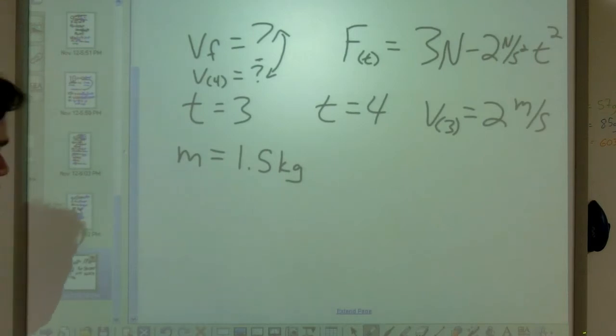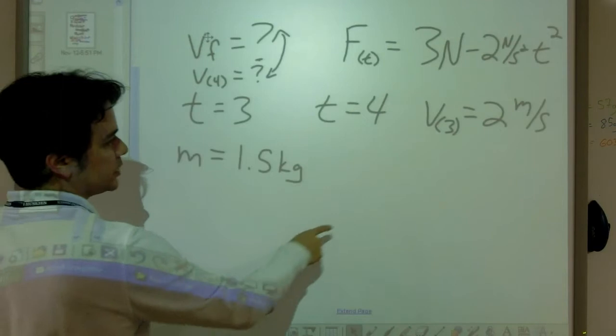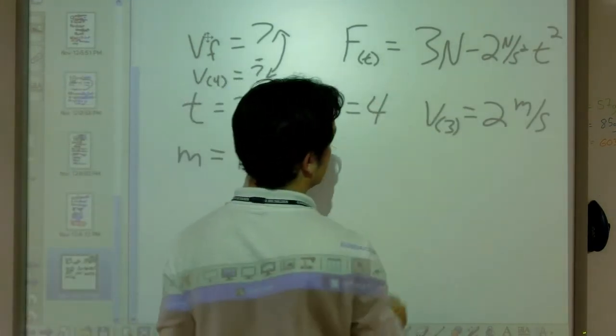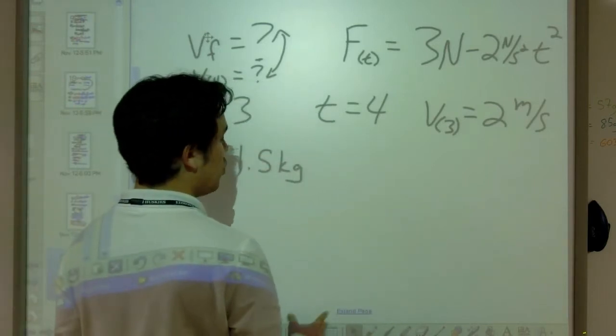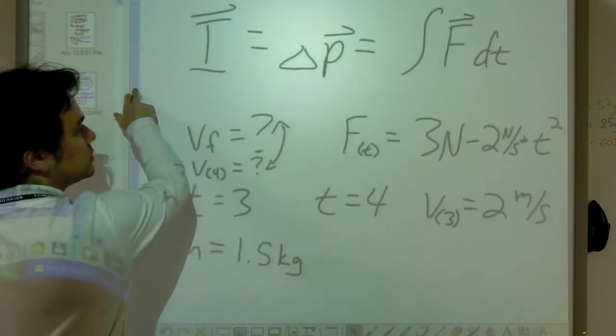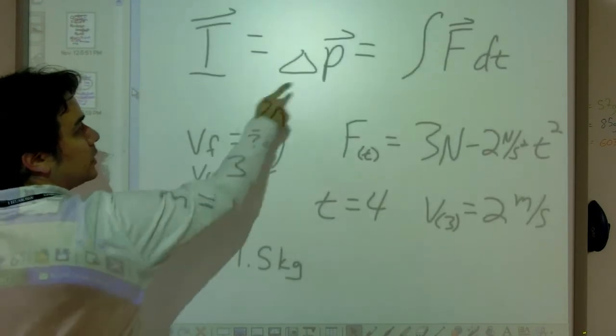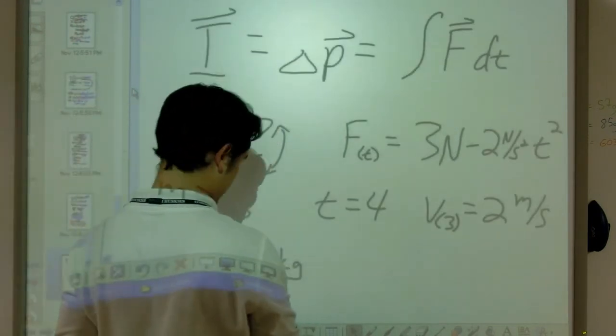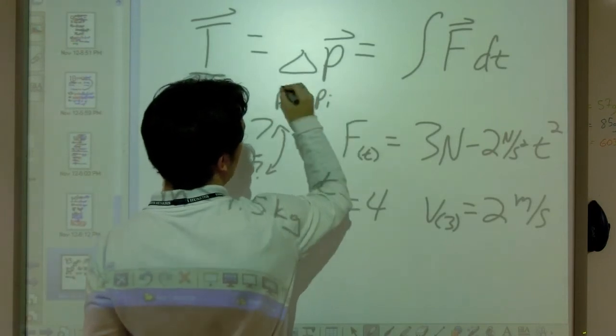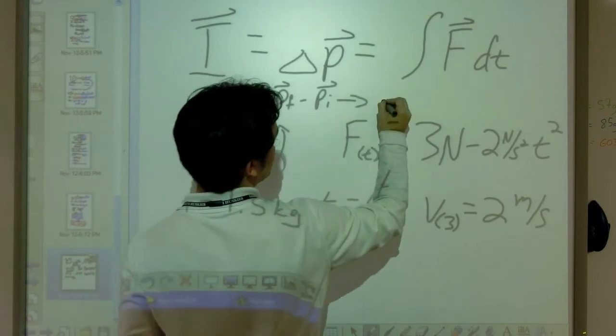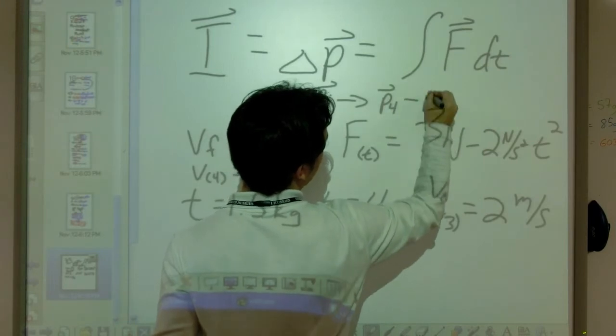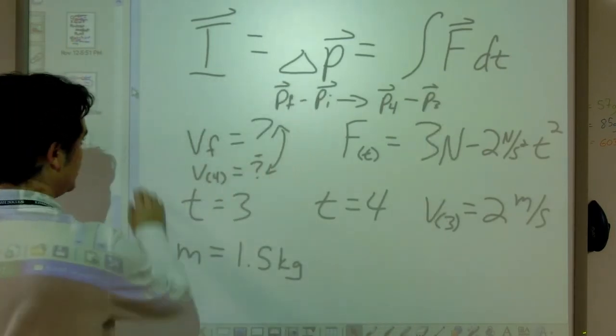We know that we start off with some velocity, two meters per second, and we know that there's a force being applied to it that follows this equation. Well, since we're probably going to be using impulse, let's convert our velocity into an initial momentum, because our delta p here is going to be p final minus p initial, or for our situation, that's going to be the same as saying our momentum at four seconds minus our momentum at three seconds.